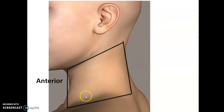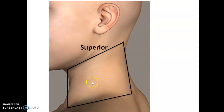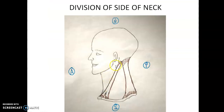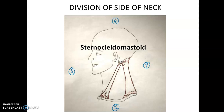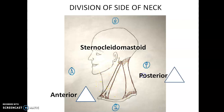This quadrangular structure has four boundaries: an anterior boundary, a posterior boundary, a superior boundary, and an inferior boundary. The division of the neck is done by one obliquely placed muscle — the sternocleidomastoid — which begins from the sternum and clavicle and goes to the mastoid process of the temporal bone. This obliquely oriented sternocleidomastoid muscle divides the neck into two triangles: a triangle in front of it is the anterior triangle, and a triangle behind it is the posterior triangle.